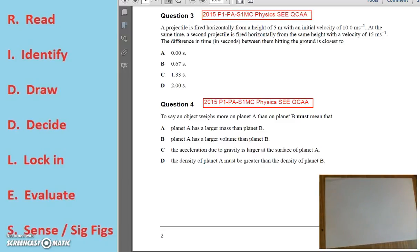2015 Physics Exam Paper 1, Part A, Section 1, Multiple Choice, Question 3. Let's read and identify. A projectile is fired horizontally from a height of 5 metres with an initial velocity of 10 metres per second.